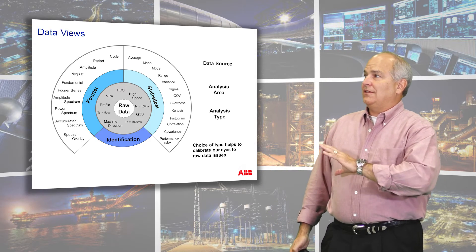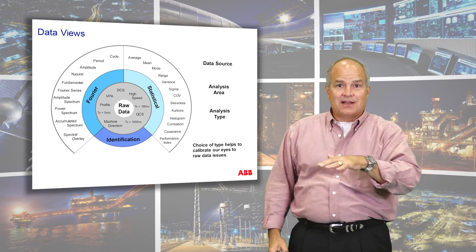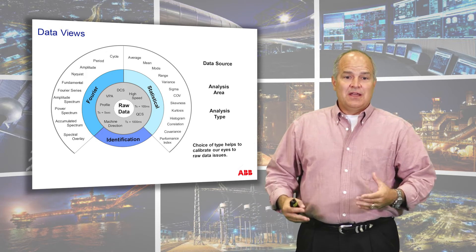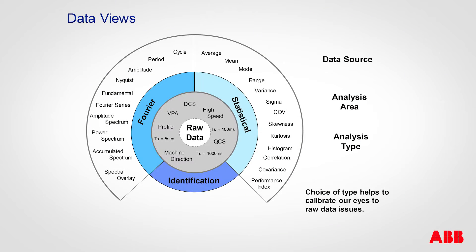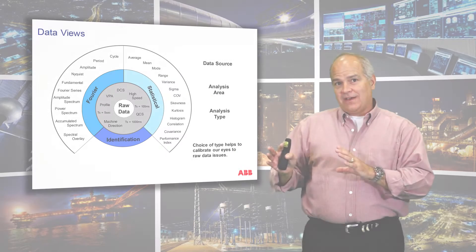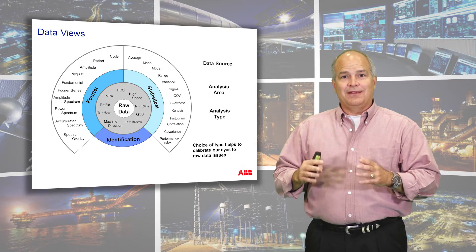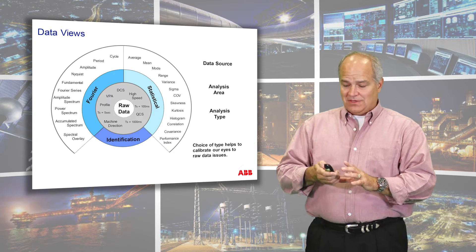In this video, we're going to get into the frequency side. If it's oscillating, that's what we're interested in. We're going to be looking at defining what the cycle is, going through a period and an amplitude, what's the Nyquist and fundamental frequencies, what's the Fourier series, amplitude and power spectrums, accumulated power, and then spectral overlay. This should take around 45 minutes, so sit back and relax. You may want to watch this a few times.